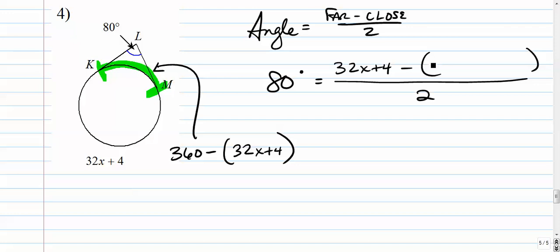360 minus whatever the other one is. Alright, so we go 360 minus, and there's another set of parentheses inside here. So it's actually a double set of parentheses, which is pretty crazy. But it all revolves around the fact that we've got this arc, the expressions given to us. Alright, that is 32x plus 4.